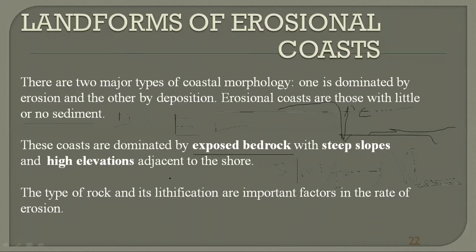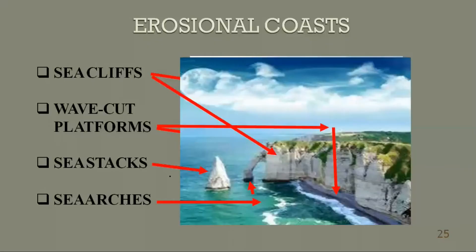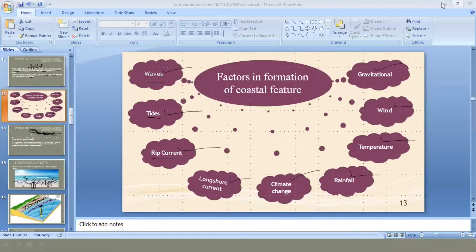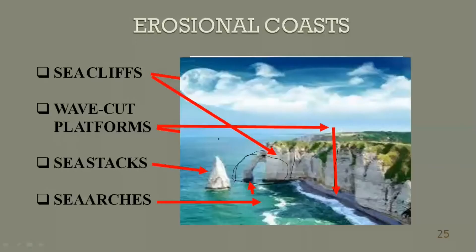These are mainly ocean coasts and they can have a variety of features. The vertical feature or vertical slope is called a cliff. We also have wave-cut platforms — not very visible here but we will see another photograph. And then you can see sea arcs, which look like the front part of an elephant.